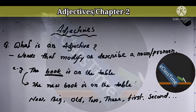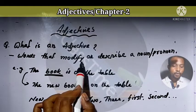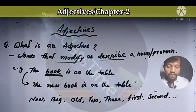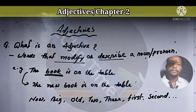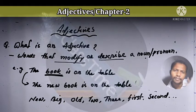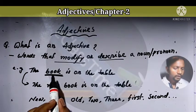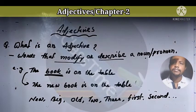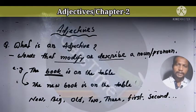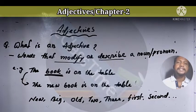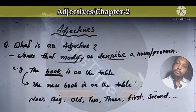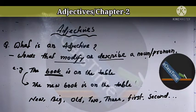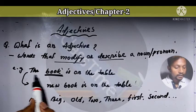Adjectives are the words that modify or describe a noun or a pronoun. For example, there is a book on the table. You can have to find out the detail with this book noun. Book is the noun, the kitab. What about this book? Is it a big book or small book? We don't know.